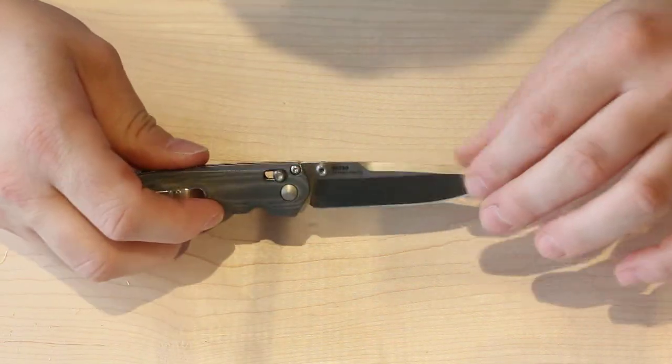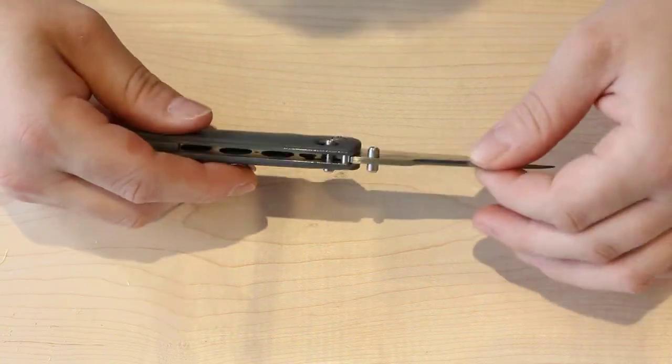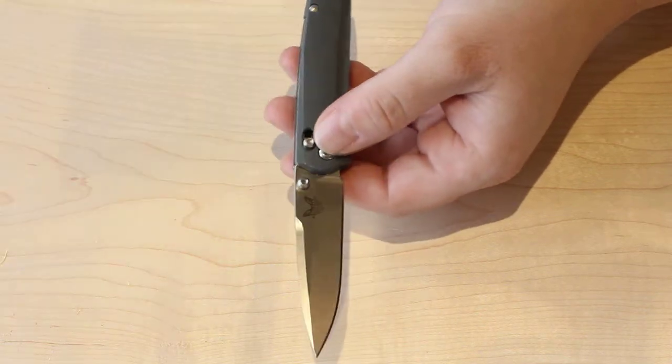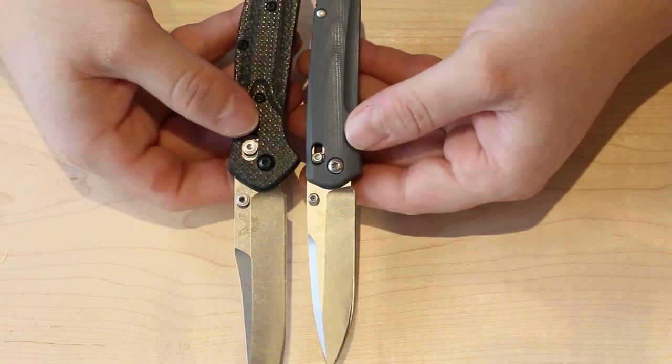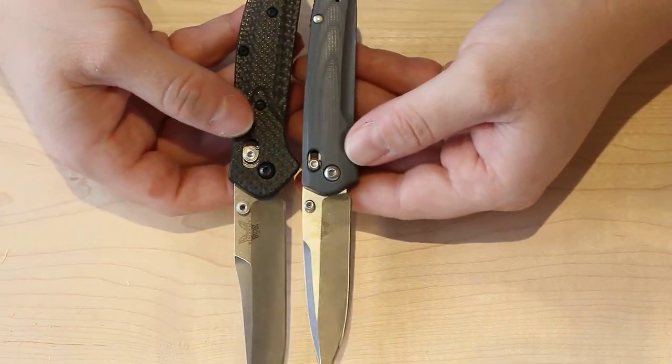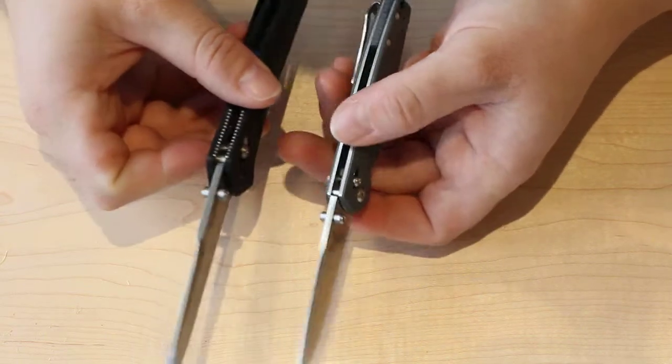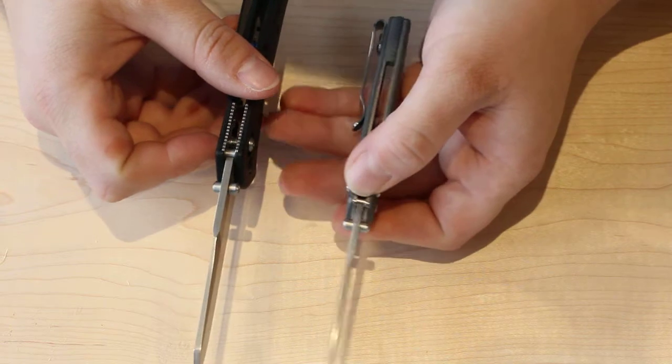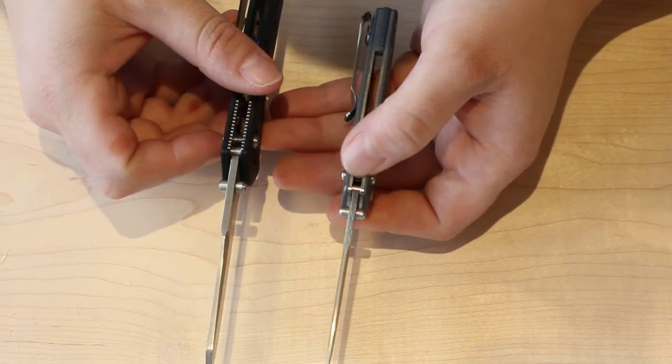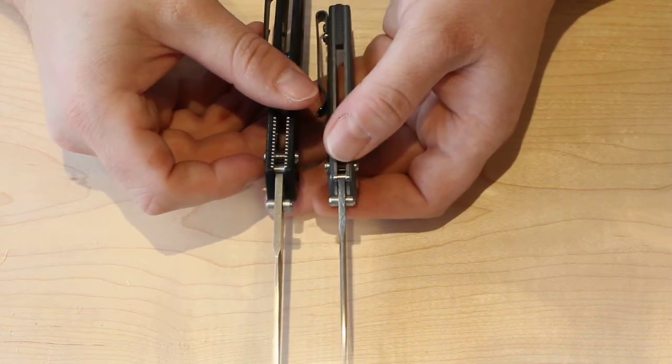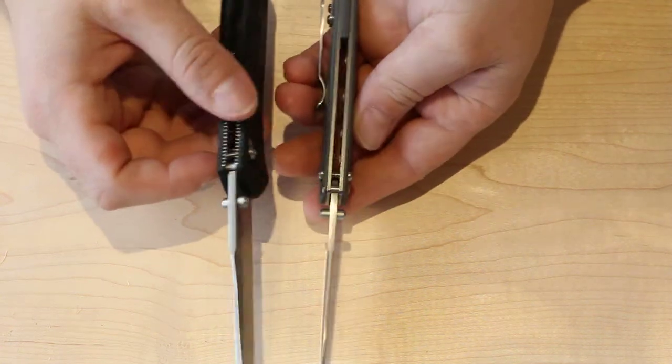The knife is actually built pretty heavy. Like I said, it has full liners. The pivot bolt is the same size as on the 940-1, which is a Torx number 10, so it has a pretty strong pivot and a pretty strong stop pin as well. It doesn't look like it's as big as the 940-1, but it definitely seems to be oversized for this knife.